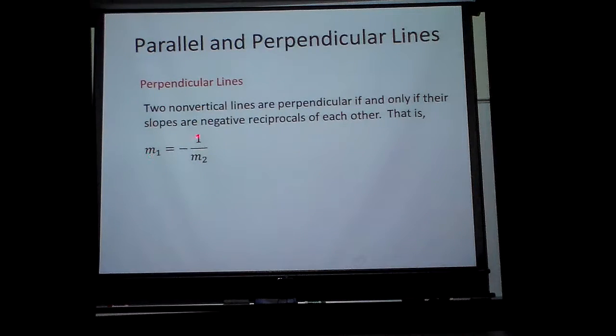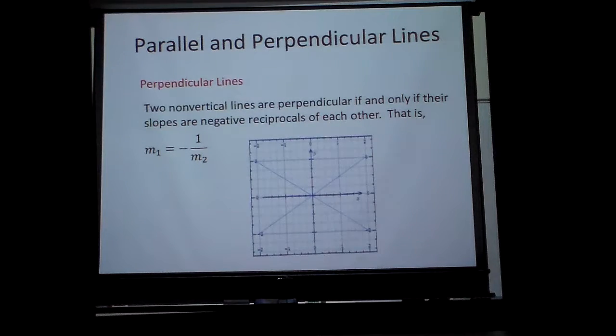In other words, if that was four, this one has to be negative one-fourth in order for it to work. To be a perpendicular slope, the reciprocals have to be, and they would look something like that.